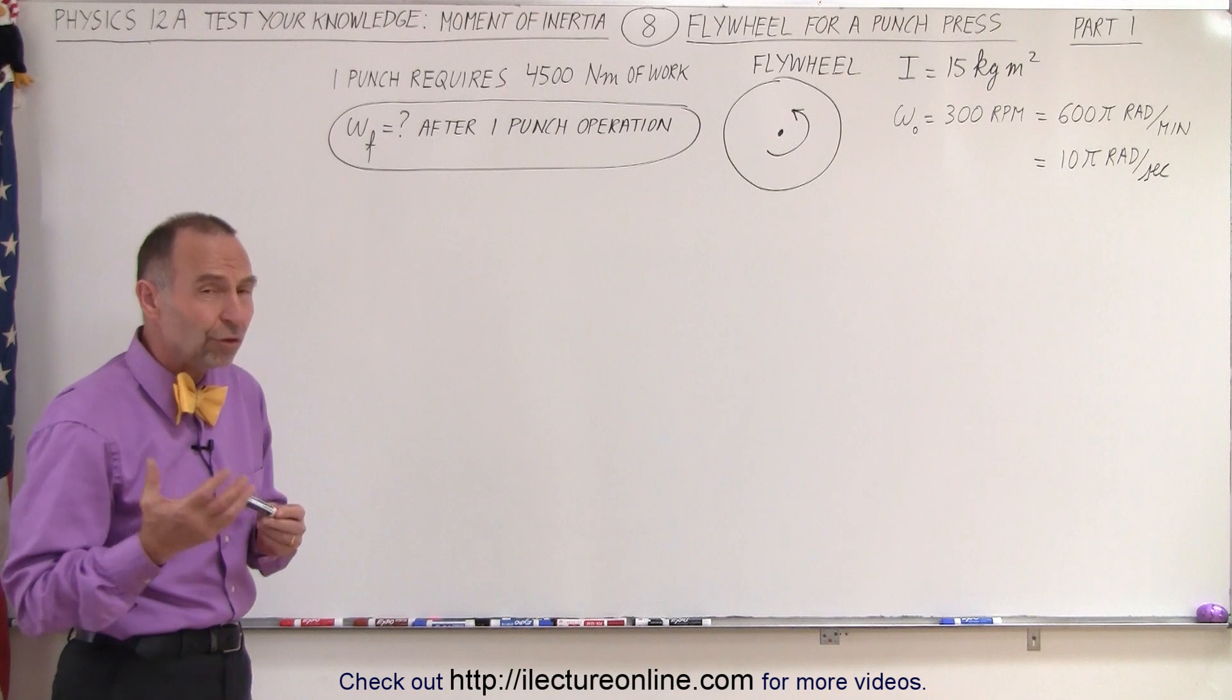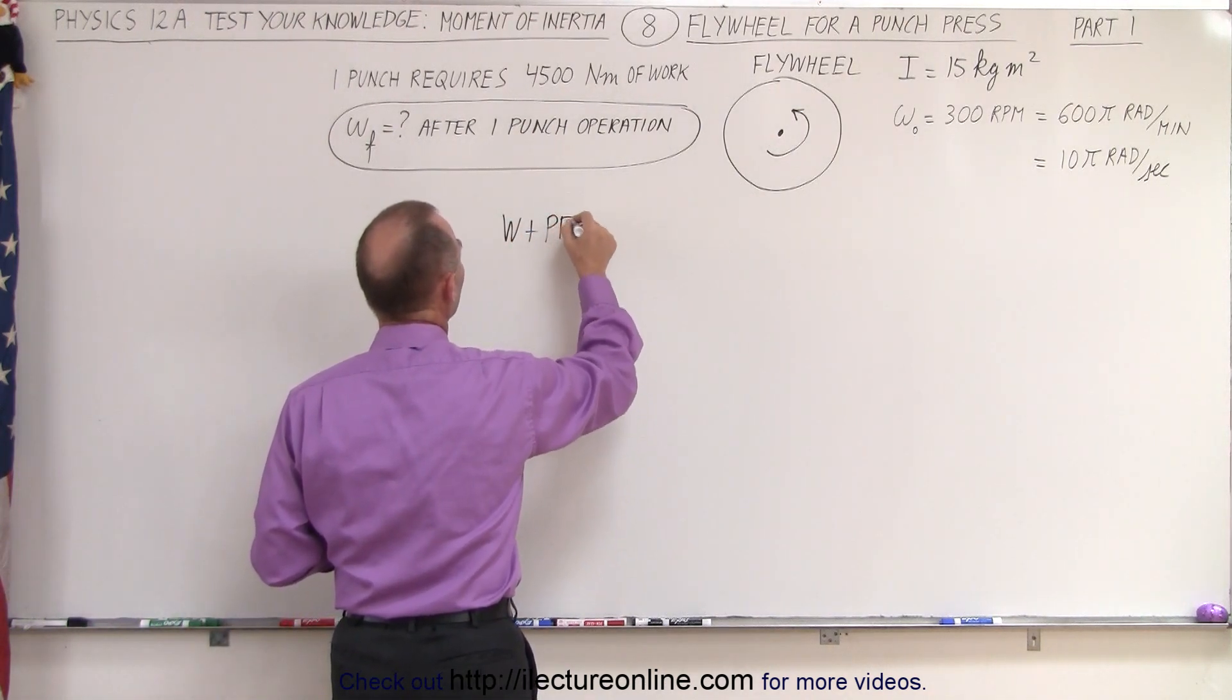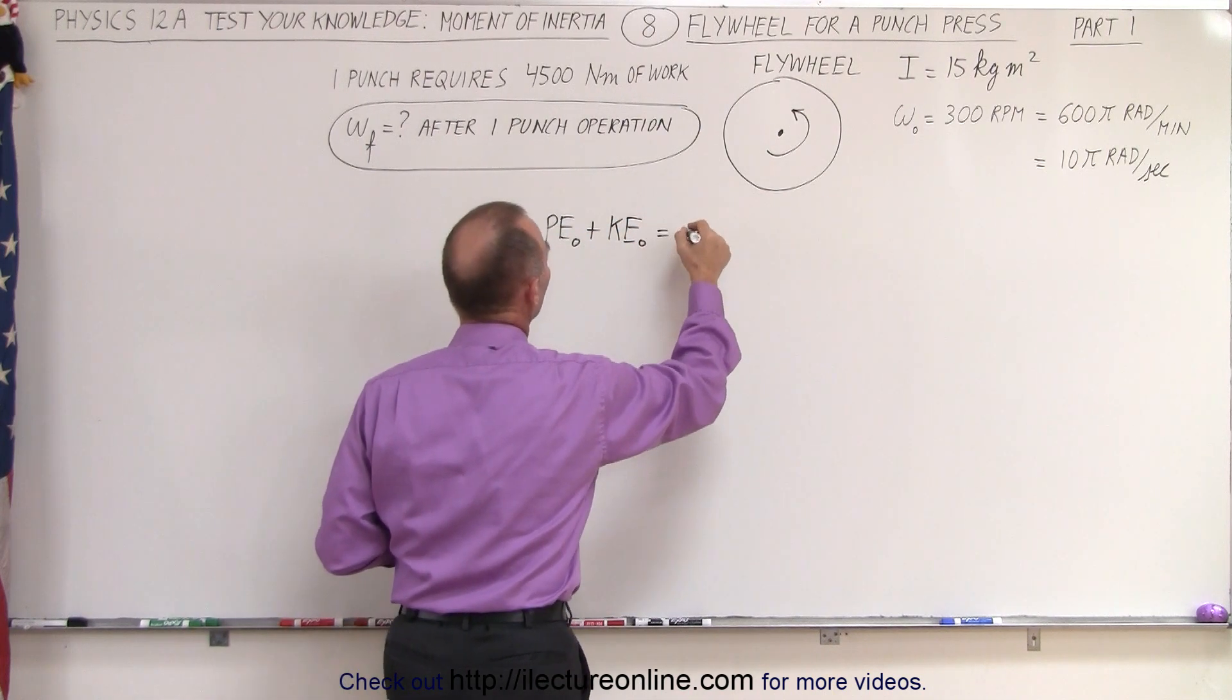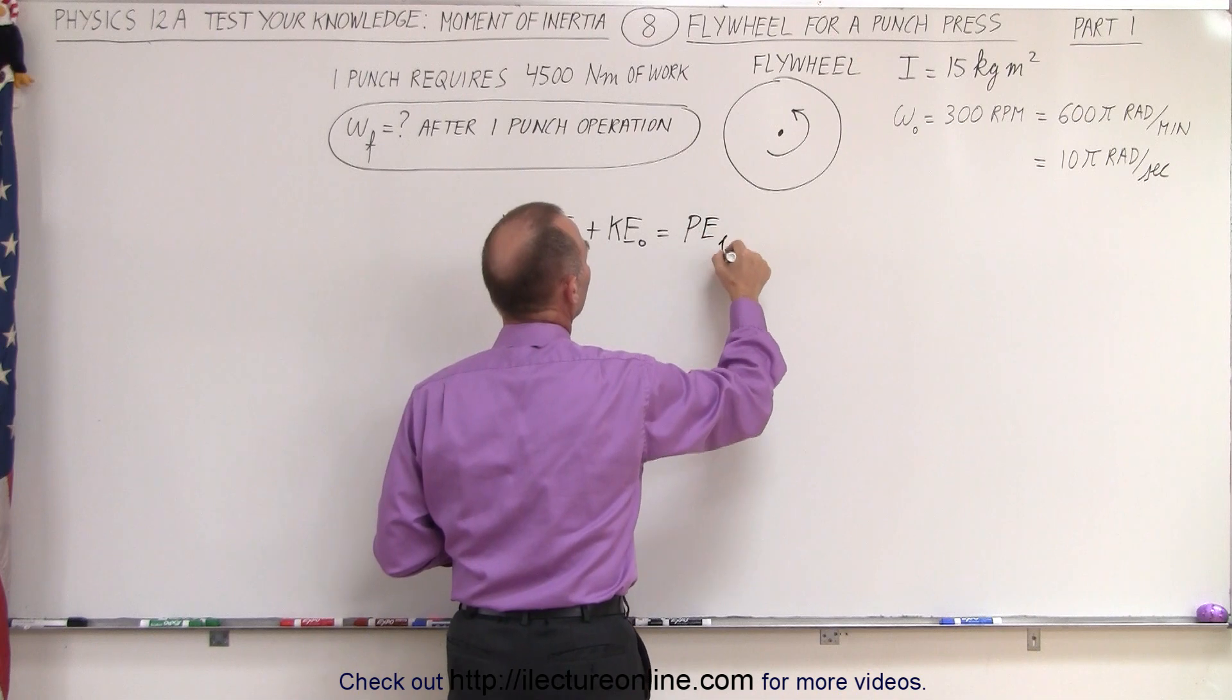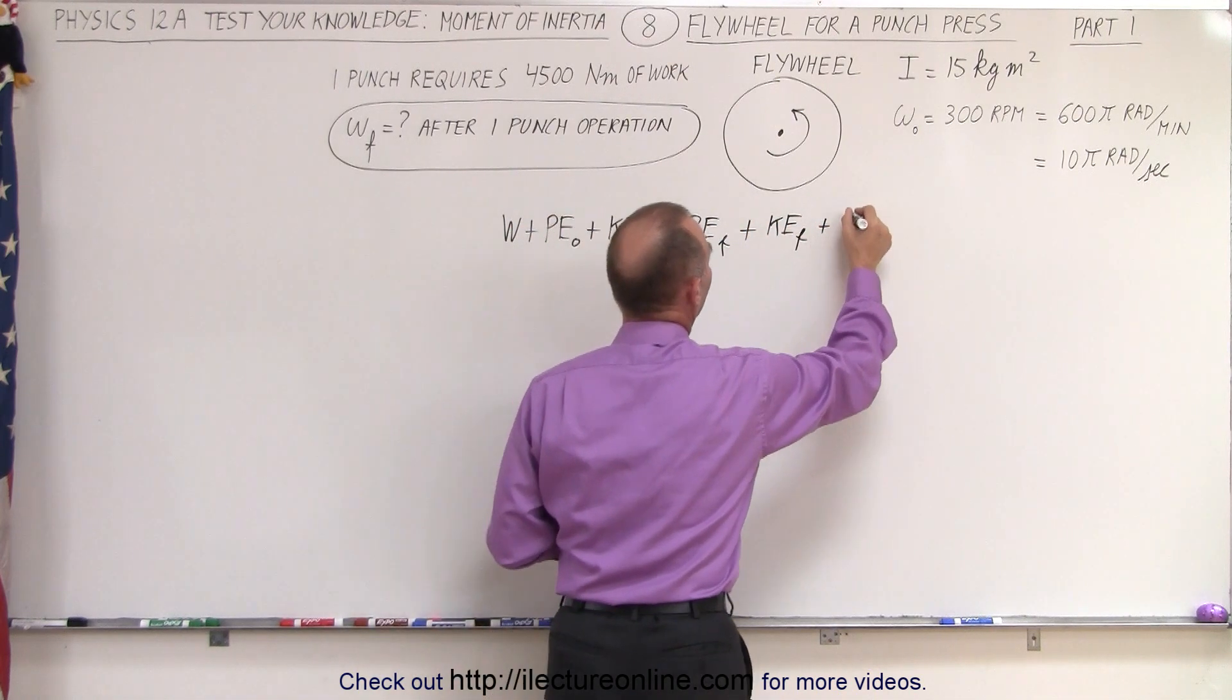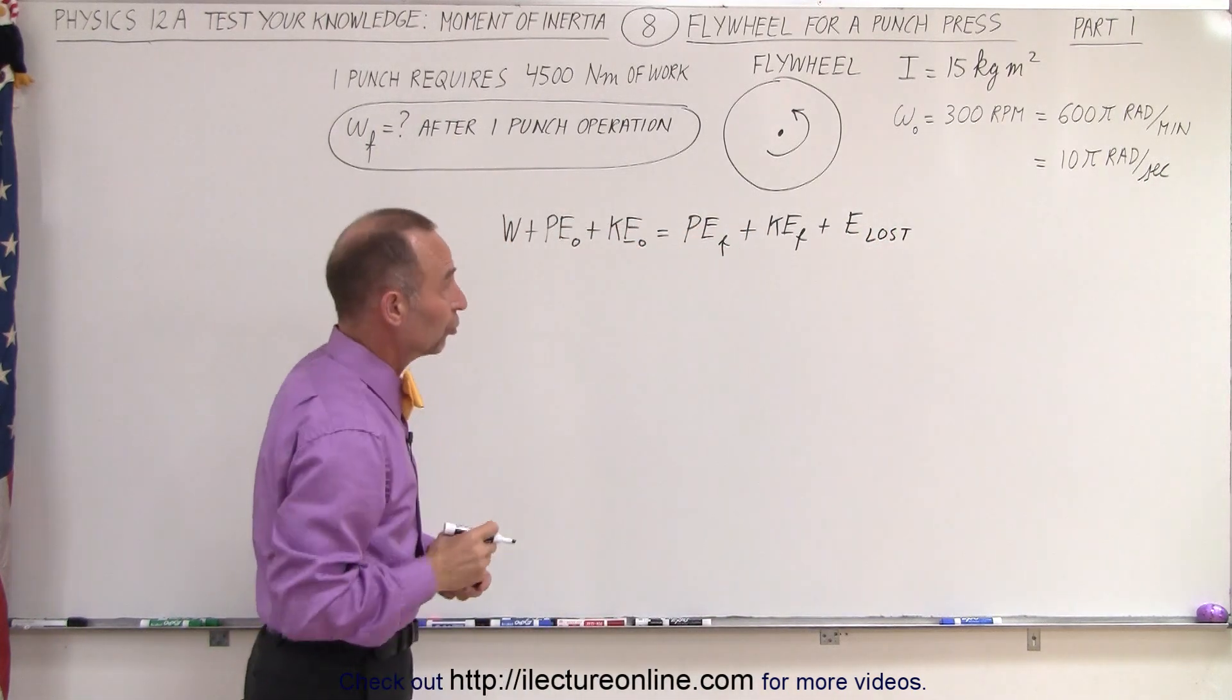We probably want to use the energy conservation equation, so work plus initial potential energy plus initial kinetic energy equals potential energy final plus kinetic energy final plus energy lost. In this case, the energy lost will be the actual punch.